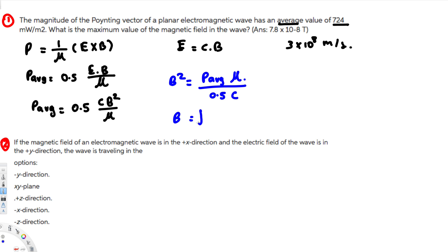Therefore B is going to be equivalent to square root of P average μ over 0.5 C. Now P average is provided, that is 724, and μ is permeability constant.